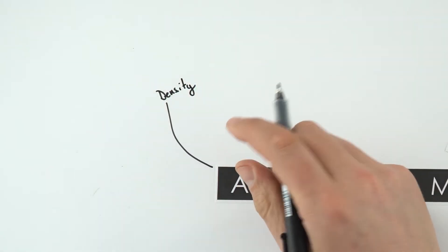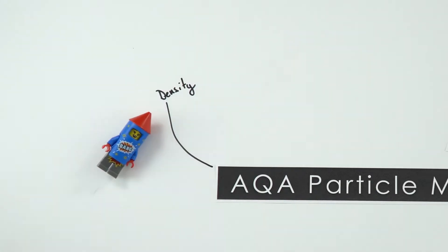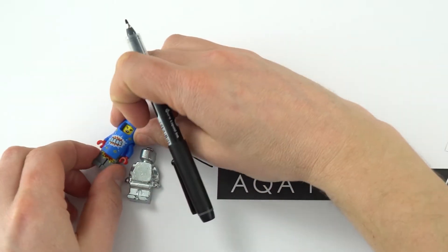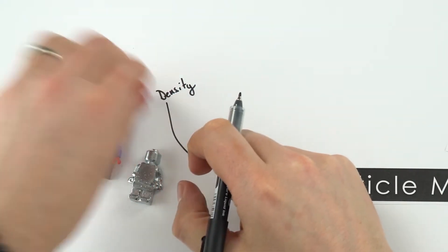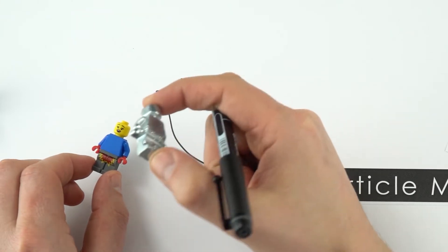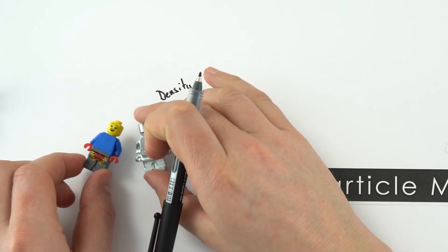Density is basically a measure of how much stuff there is in a given volume. Perhaps we have two things which have the same volume. What we have is the same volume of material here, but this one here is a lot heavier, it's got a bigger mass, which means there's effectively more stuff in the same space.